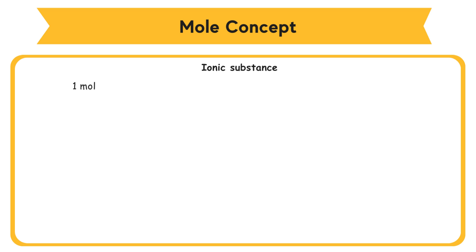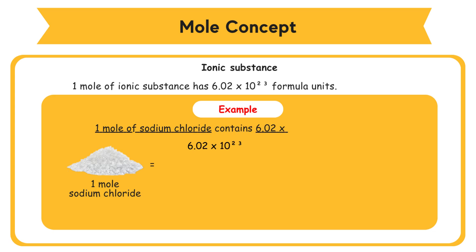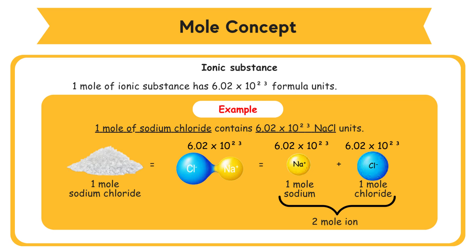Ionic substance consists of ions. 1 mole of ionic substance has 6.02 × 10²³ formula units. For example, 1 mole of sodium chloride contains 6.02 × 10²³ NaCl units. Since NaCl is made up of sodium ions, Na⁺, and chloride ions, Cl⁻, 1 mole of sodium chloride contains 1 mole Na⁺ and 1 mole Cl⁻. So there are 2 moles of ions for every 1 mole of NaCl.